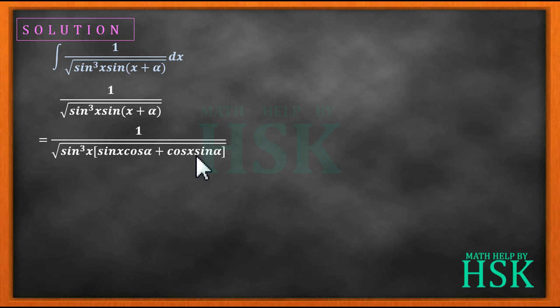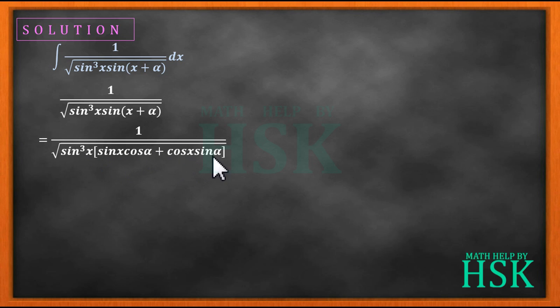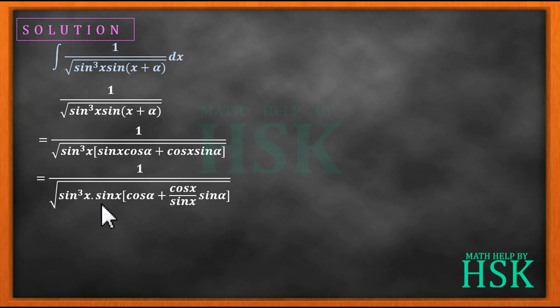Next, I'm going to do something different — I'm going to take sin x common from this bracket. Why I've taken sin x common will become clear in a few steps. The first term contains sin x, no problem. The second term does not contain sin x, so we divide sin x into that second term.